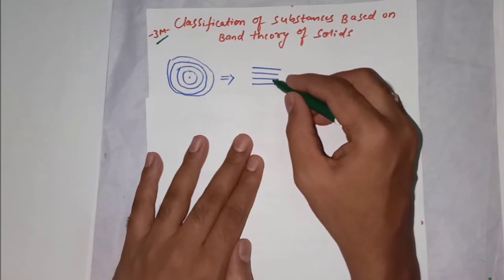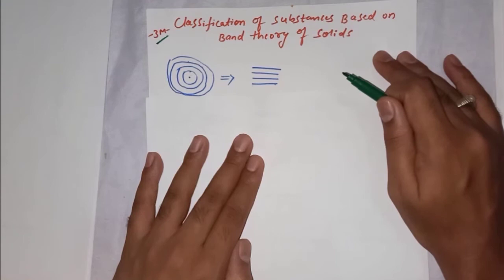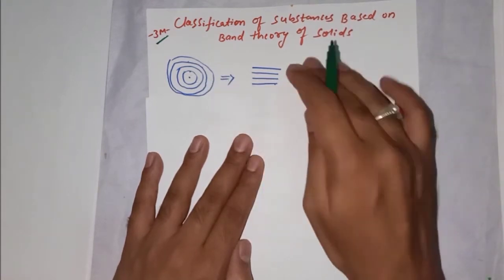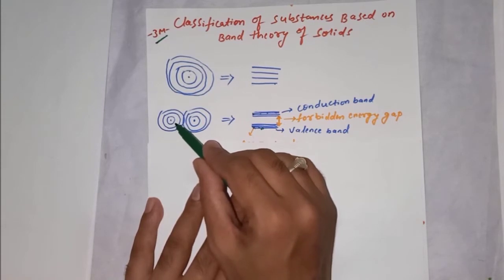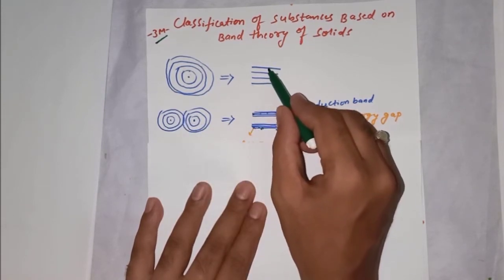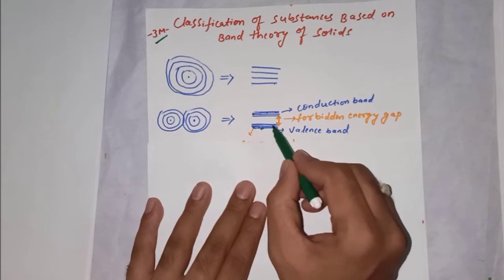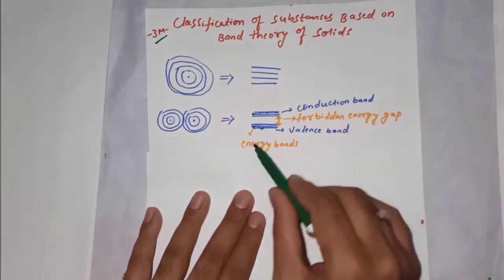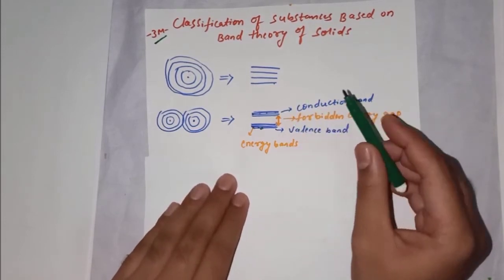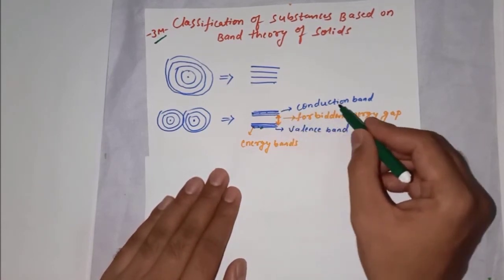Those separate energy levels for a single atom are called discrete energy levels or discrete orbits. Now if you consider two atoms in close proximity, you will not get discrete energy levels. Instead, these two atoms interact and produce a band — a lower energy band and a higher energy band. These are called energy bands.